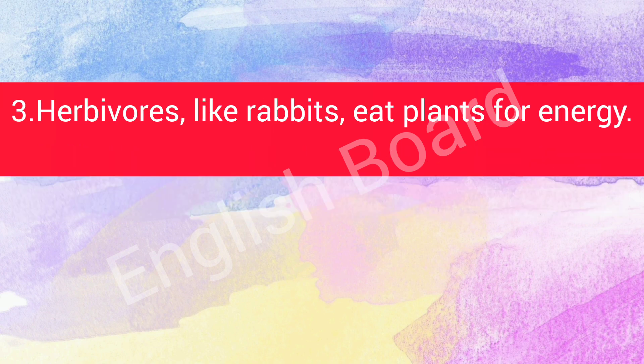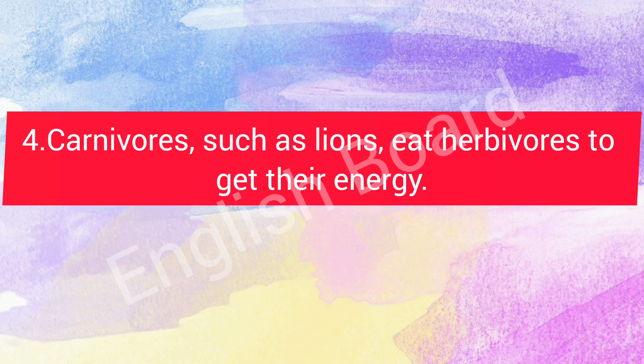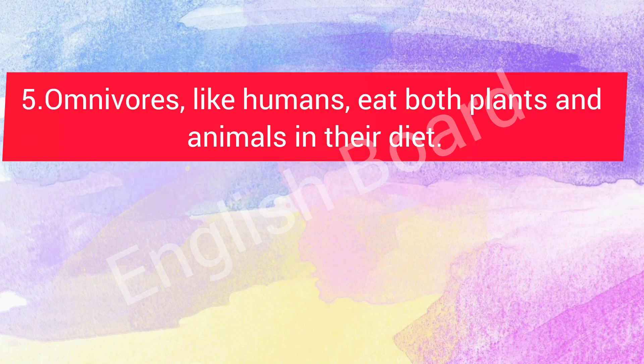Herbivores like rabbits eat plants for energy. Carnivores such as lions eat herbivores to get their energy. Omnivores like humans eat both plants and animals in their diet.